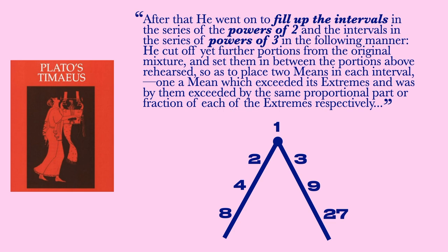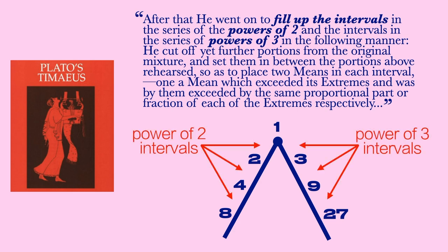After that, he went on to fill up the intervals in the series of the powers of two, and the intervals in the series of powers of three, in the following manner. He cut off yet further portions from the original mixture, and set them in between the portions above rehearsed, so as to place two means in each interval. One a mean which exceeded its extremes, and was by them exceeded by the same proportional part or fraction of each of the extremes respectively. So let's go over this in detail, because it's not as difficult to comprehend as it might sound.